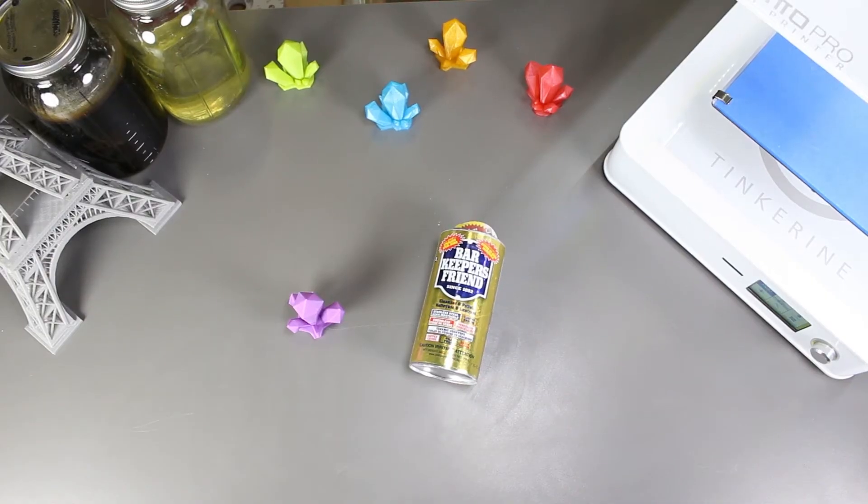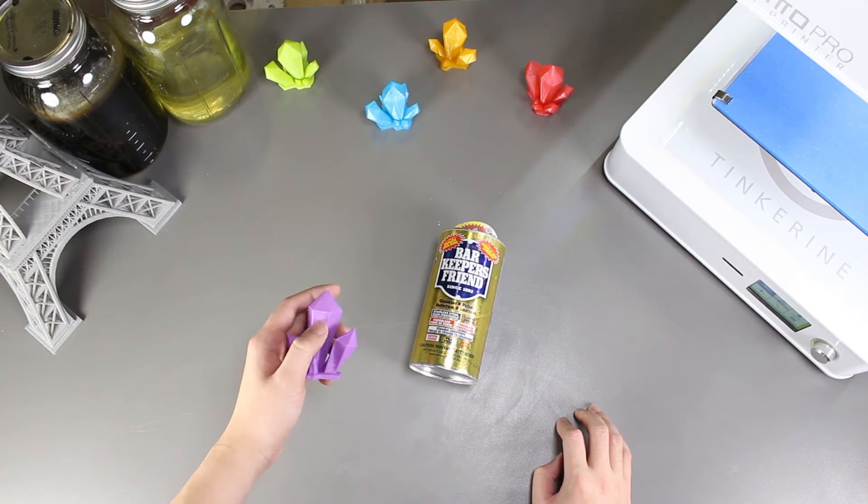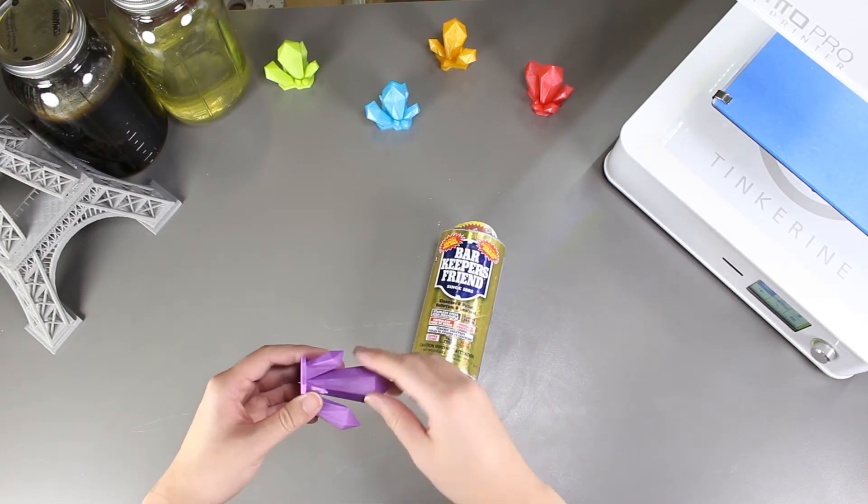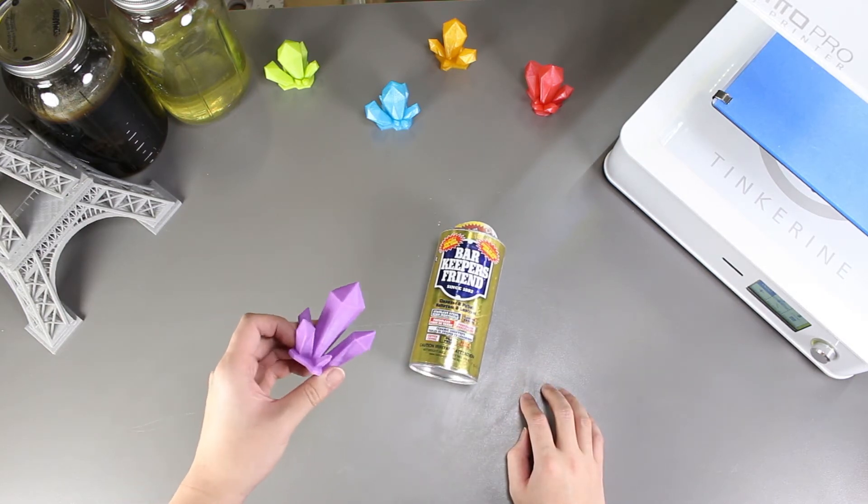Well there we have it, we tried using Bar Keeper's Friend to smooth out our print, and it looks like it works. It took 25 minutes for our results to show, but even then, it's still not completely smooth yet. It seems to take quite a bit of effort and time before we can actually smooth it out, even more so than Brasso.